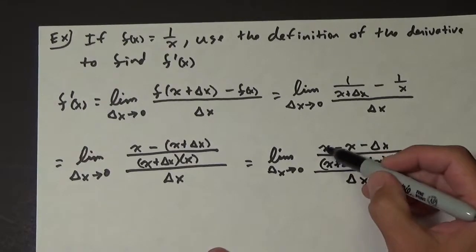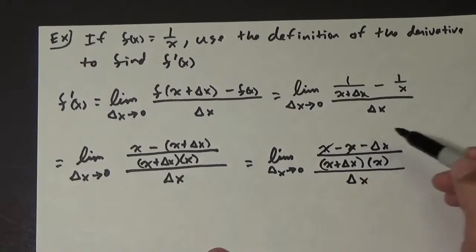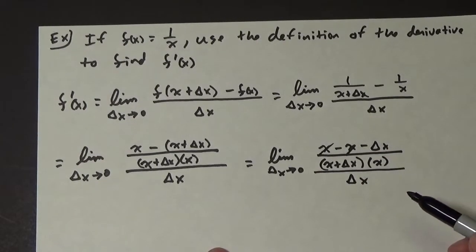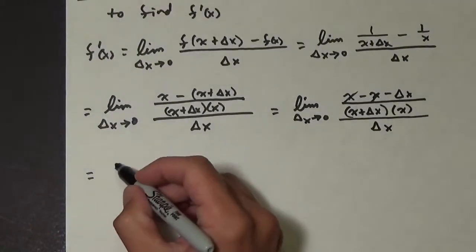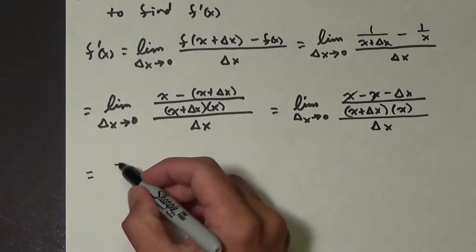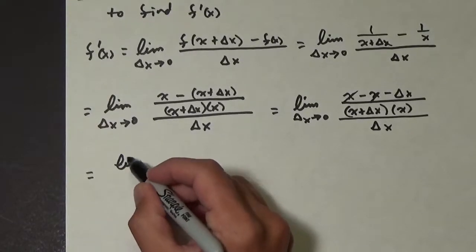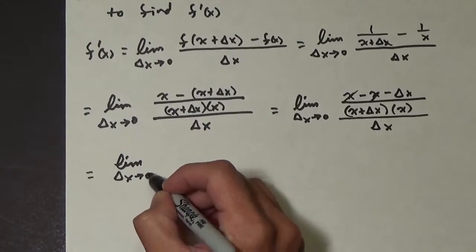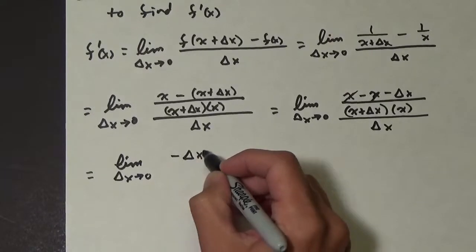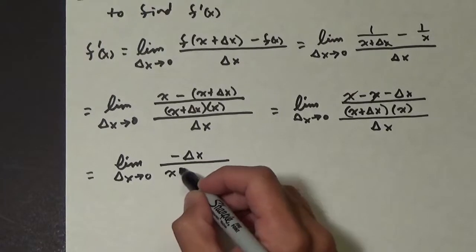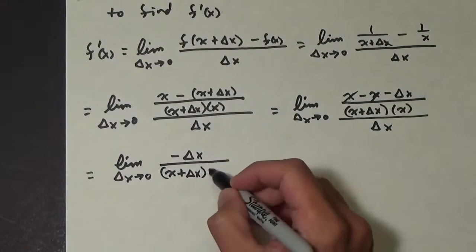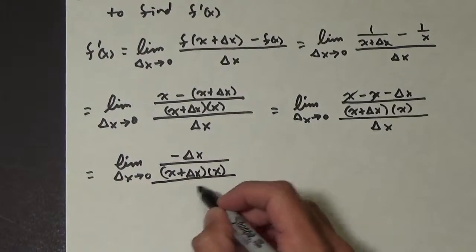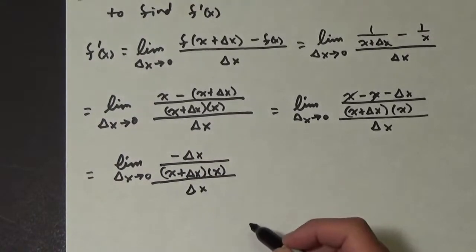So these x's cancel out — that's nice. We have the limit as delta x approaches zero of negative delta x, all over x plus delta x times x, all over delta x.